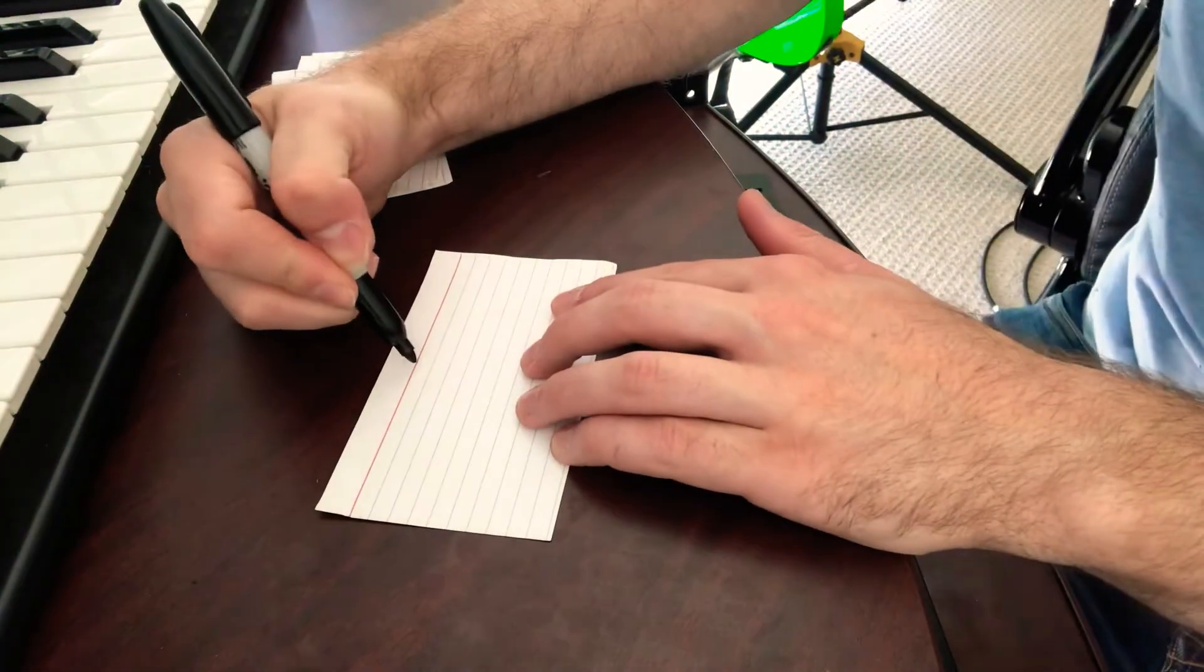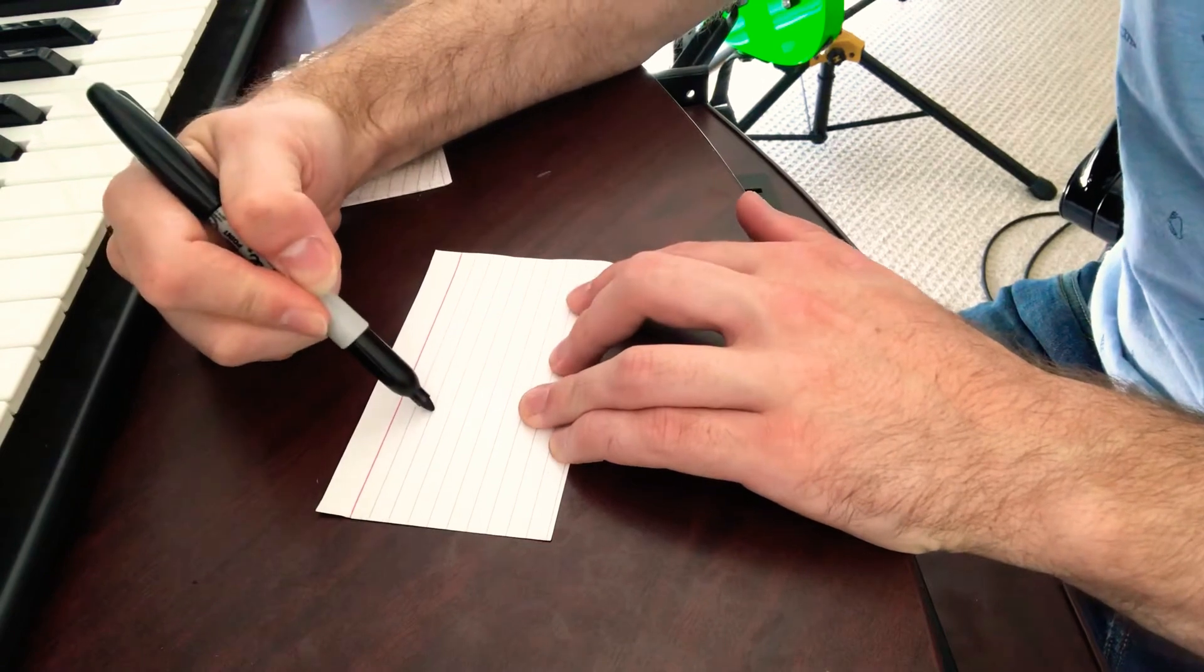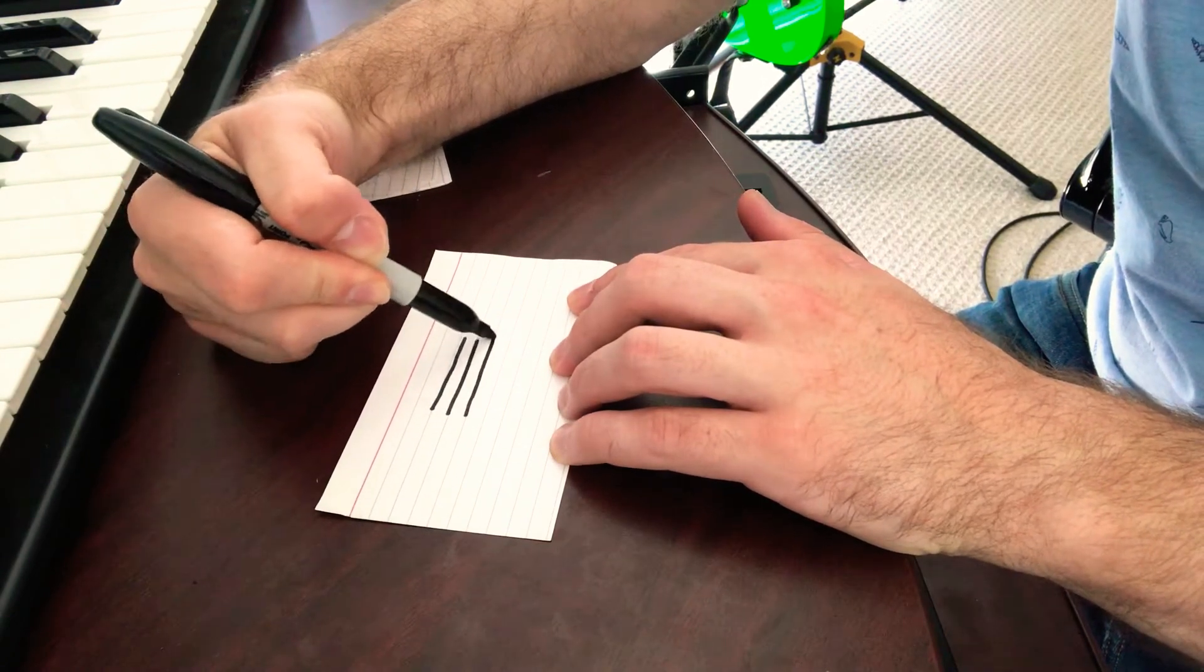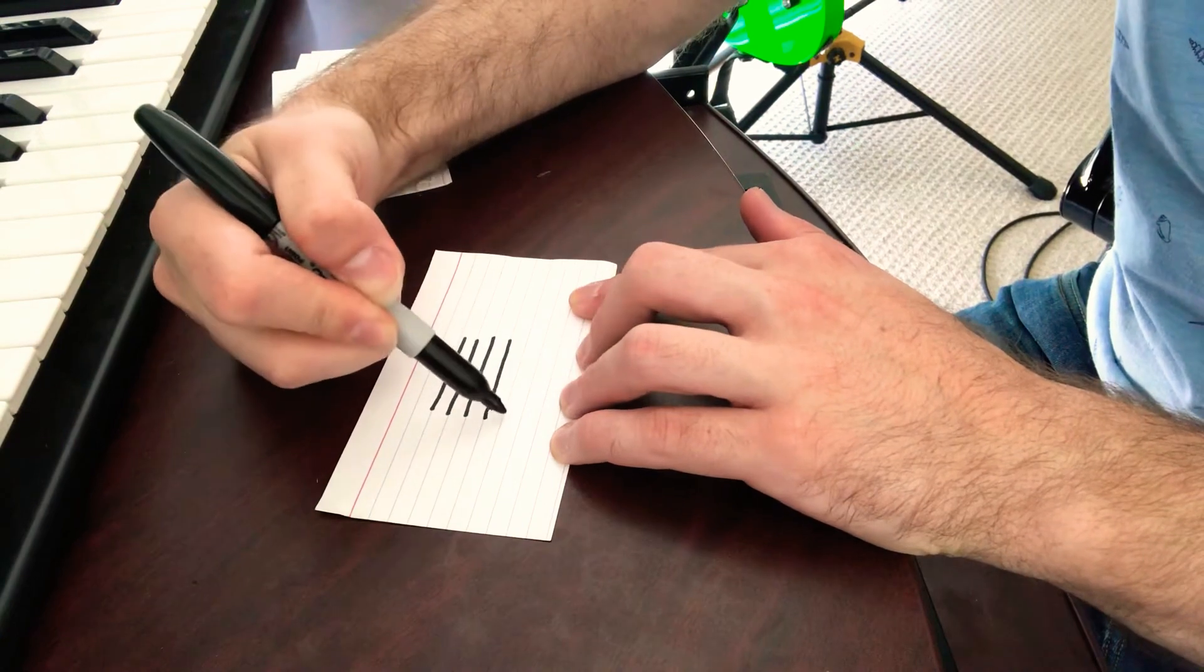So once again, you count down about two lines from the top of your cue card. You just follow the lines that are already there, and make yourself five lines for your staff.